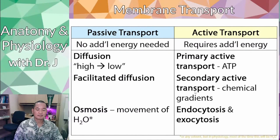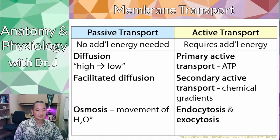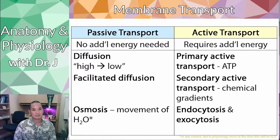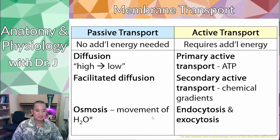For active transport, there are two main types. There is tertiary active transport, but that's graduate or med-school level. The two main types are primary active transport, which requires a chemical called ATP, and secondary active transport, which relies on a chemical gradient — basically some difference in chemical concentration between different sides of the membrane. There's also endocytosis and exocytosis.